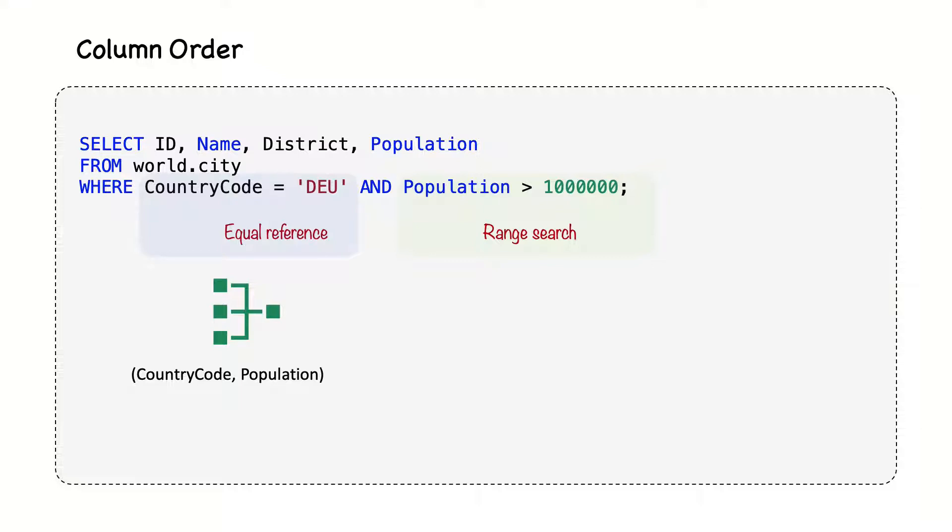Therefore, for this query example, we need to add the country code column before the population column in order to use the index for both conditions. Furthermore, the index can also be used to sort the results using the population value.